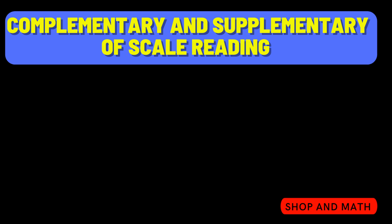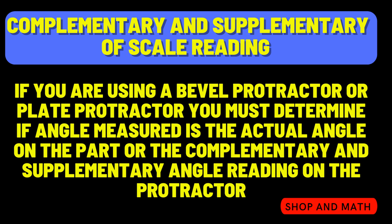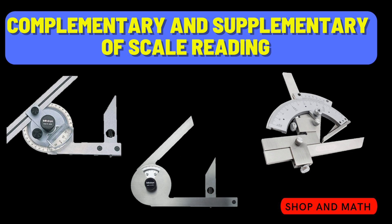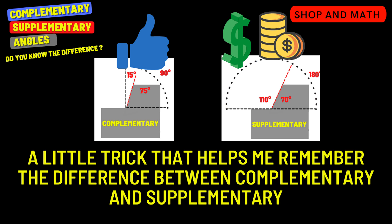Right about now you're asking yourself where are we ever going to use this in real life? Well it is used in the complementary and supplementary of scale reading. If you are using a bevel protractor or plate protractor, you must determine if the angle measured is the actual angle of the part or the complementary or supplementary angle reading of the protractor. When using these devices, if we add the acute angle attachment, then all of a sudden you're not only dealing with the supplementary or complementary angle, you're also dealing with the added acute angle of the piece that you're adding on as well.